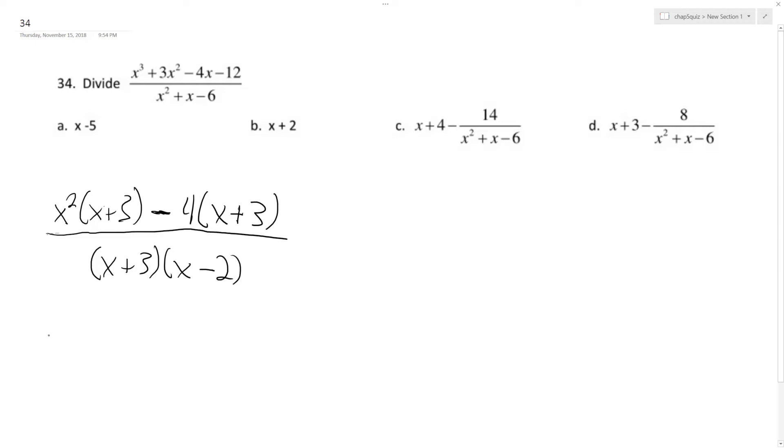So, alright, so further, so this becomes x plus 3, and then quantity x squared minus 4. I'm still working with a numerator.